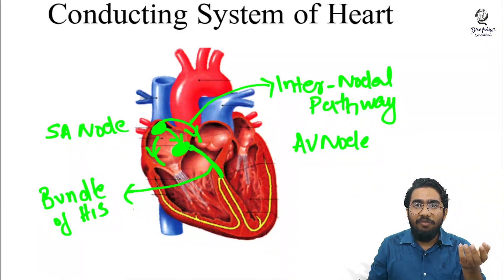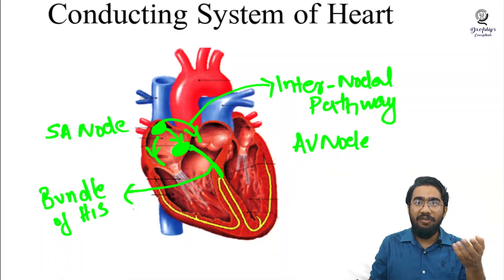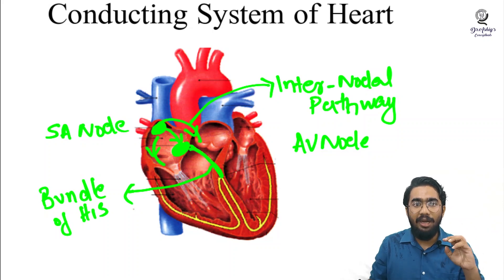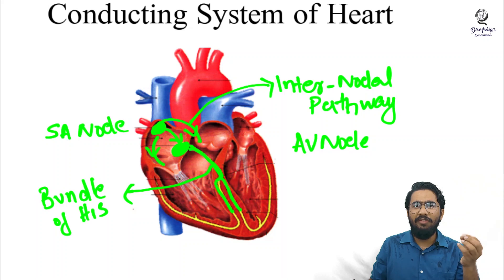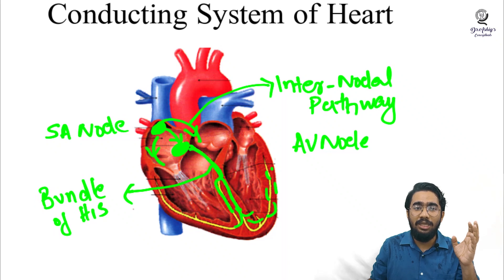The bundle of His initially divides into left and right bundles, and each of these gives rise to very small branches throughout the ventricular musculature. These smallest branches of the bundle of His are known as the Purkinje fibers.